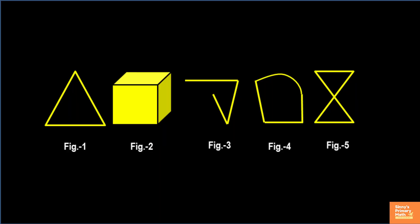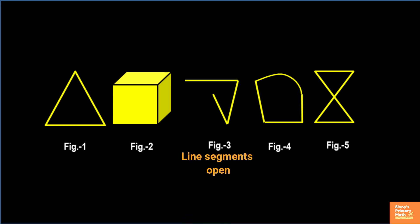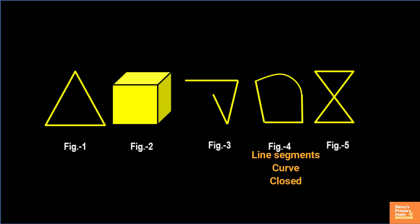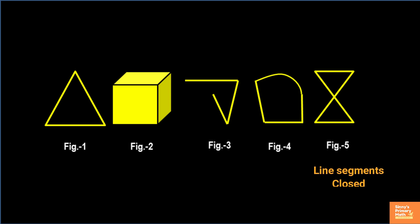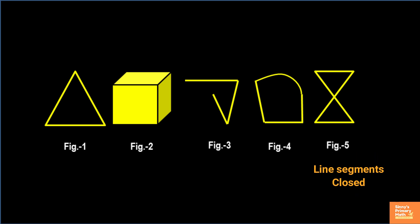Observe these figures. Figure 1 is quite familiar to you all — it is a triangle. Let us examine the other shapes. Figure 2 is a solid shape which is 3-dimensional. Figure 3 is a plane shape made up of line segments and it is open. Figure 4 is a plane shape made up of line segments and a curve and it is closed. Figure 5 is a plane shape made up of line segments and it is closed, but it is a complex figure since the lines intersect.